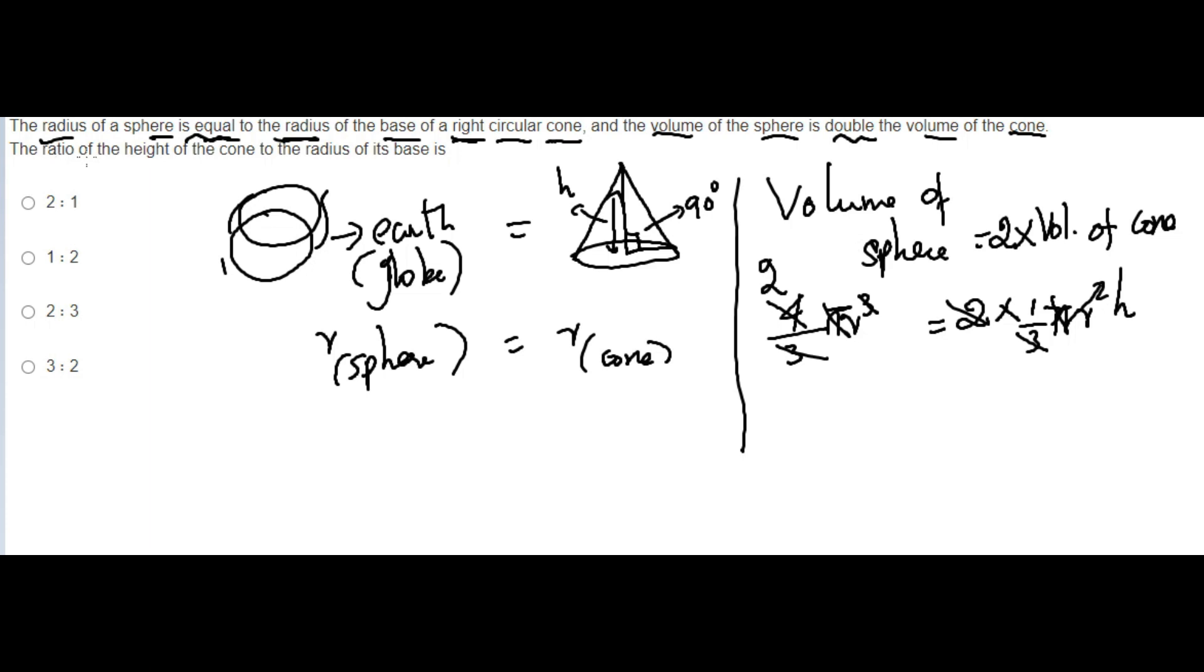They've asked the ratio of height of the cone to the radius of the base. So take r to that side, so height divided by r equals what's here - two is here. Take the one here, so 2/1.